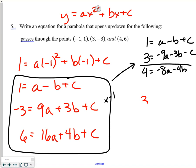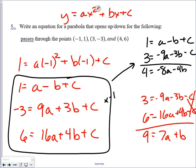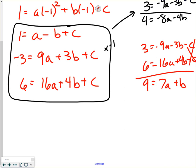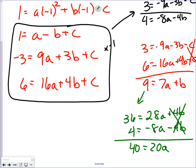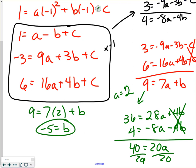So, if I did 1 equals a minus b plus c, and then positive 3, negative 9a, negative 3b, and negative c. So, I multiplied this one times negative 1. I get 4, negative 8a minus 4b. Now, I want to take the middle one and the bottom one there. So, again, I'm going to multiply this one by negative 1 again. Negative 9a, negative 3b, minus c. And then, 6. 16a plus 4b plus c. Cancels. 9 equals 7a plus b. Scrolling down now. Now, I'm going to take those two equations. I'm going to multiply this one times 4. 36 equals 28a plus 4b. 4 equals negative 8a minus 4b. Cancels. 40 equals 20a. Divide by 20. A equals 2. If I know that a equals 2, I can now take that back somewhere else. So, 9 equals 7 times 2 plus b. 14. Subtract 14. I get b to be negative 5.